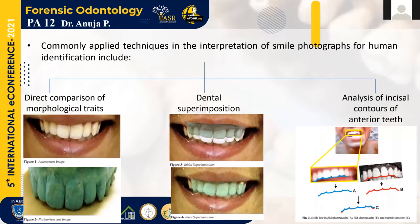The third method includes analysis of incisal contours of anterior teeth. In this method, the incisal edges of the upper teeth — that is from canine to canine — are traced in both the ante-mortem and the post-mortem photographs. They are then entered into a photo app or Photoshop software and superimposed in order to obtain a positive identification. This method helps determine whether the ante-mortem and the post-mortem photograph belong to the same individual or not.